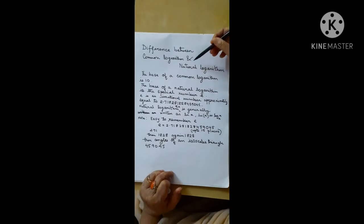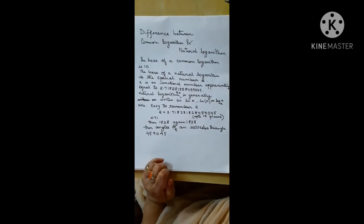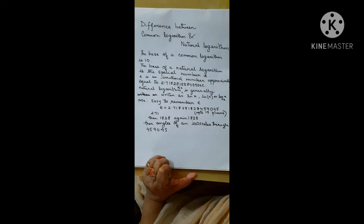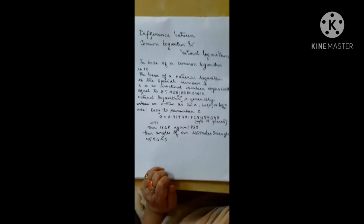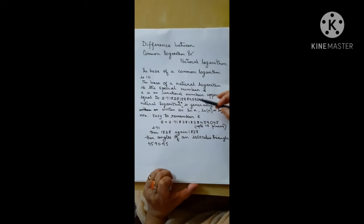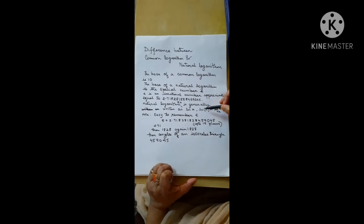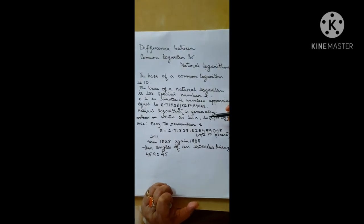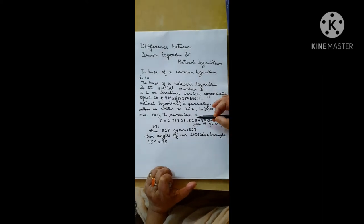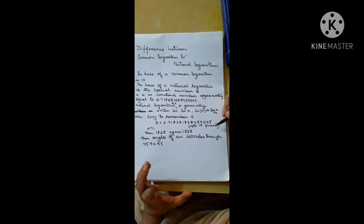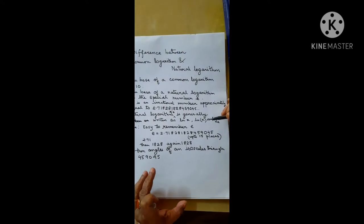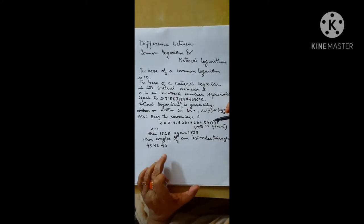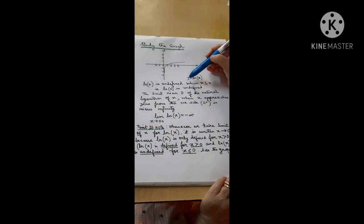The base of a common logarithm is 10. The base of a natural logarithm is the special number e, which is an irrational number approximately equal to 2.718281828459045. Natural logarithm of x is generally written as ln x or log x to the base e. It is easy to remember e: 2.71828, then the angles of an isosceles triangle — 459045.